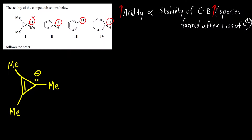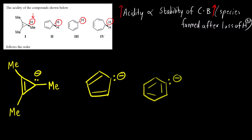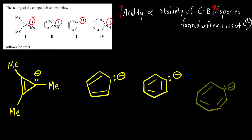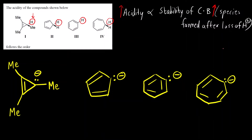For the first compound, if I remove this H, we get this conjugate base. For the second compound, this is the conjugate base. For the third and fourth, these are the conjugate bases. I will label them 1, 2, 3, and 4.